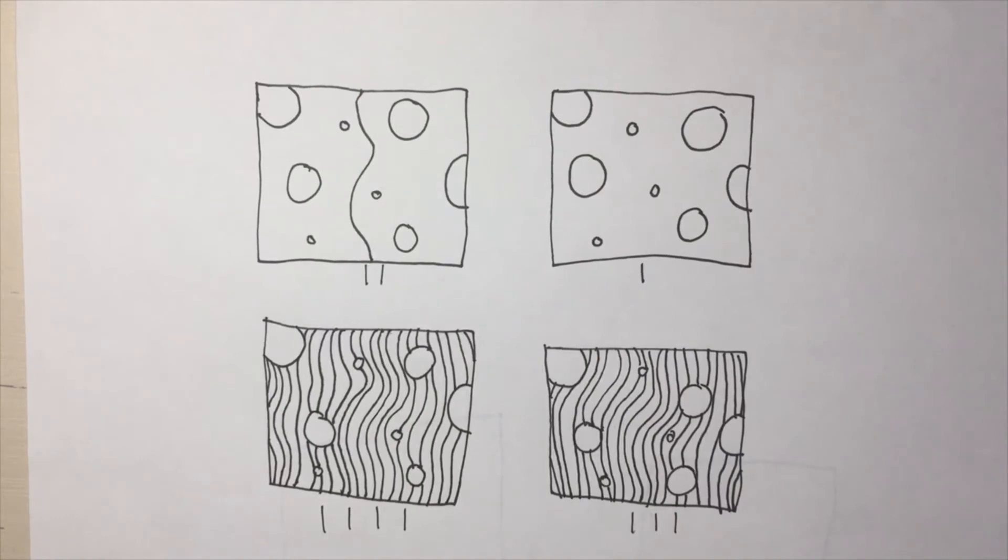Alright, I'm back and all done putting squiggly lines in my boxes. Let's move on to step 4.